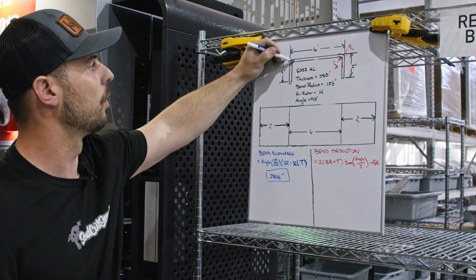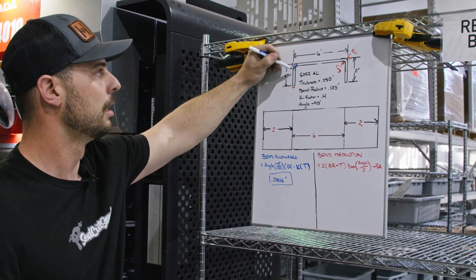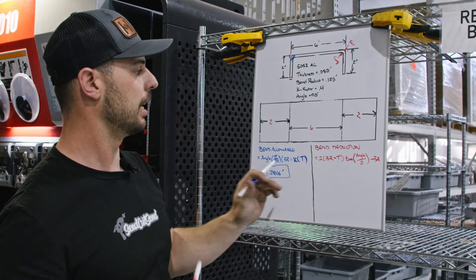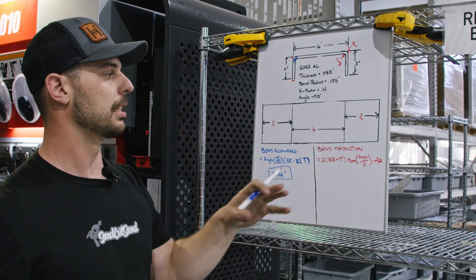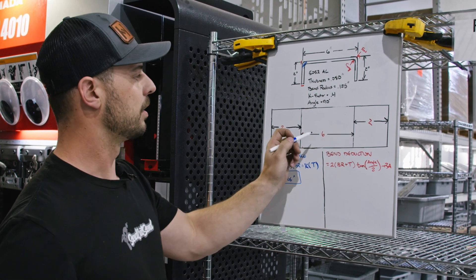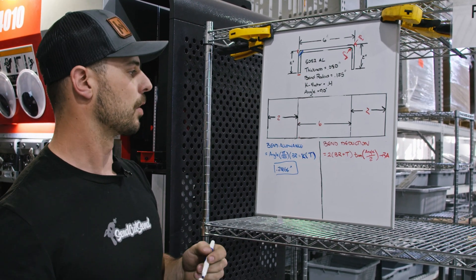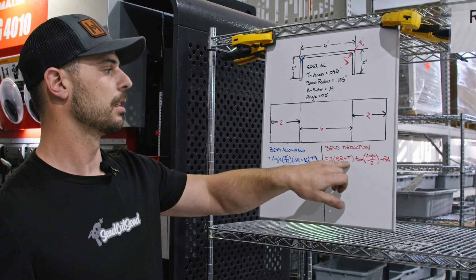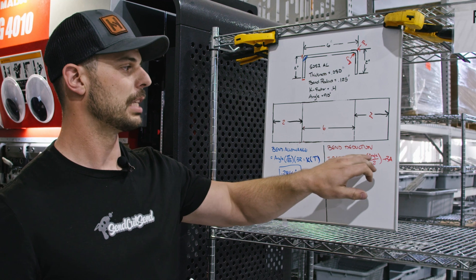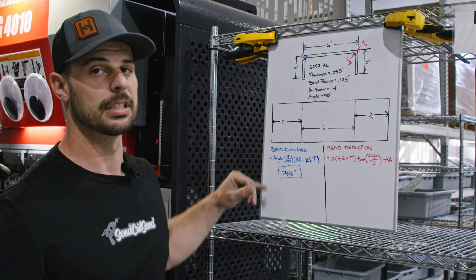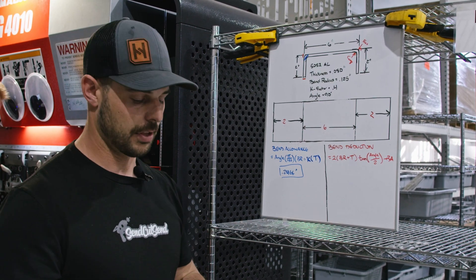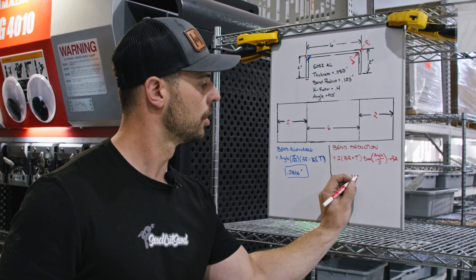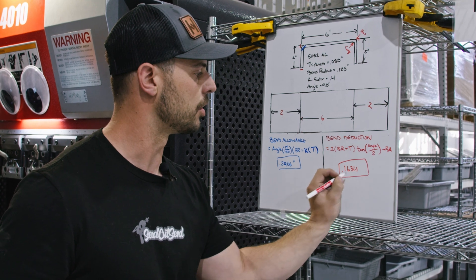Now that we know how long the bend is going to be — accounting for that stretch component — we can calculate the bend deduction: how much we need to remove from our dimensions to put the bend lines in the correct place. To do this we need the bend radius again, the thickness of the material, the angle, and the bend allowance we just calculated. If we put all of those in, we end up getting a value of 0.1634 inches.